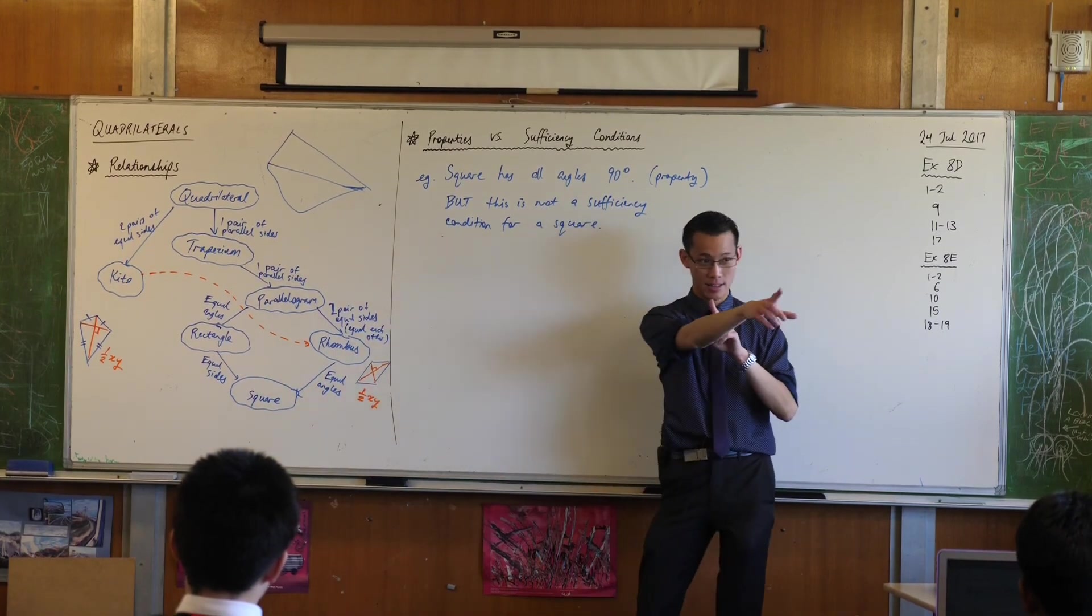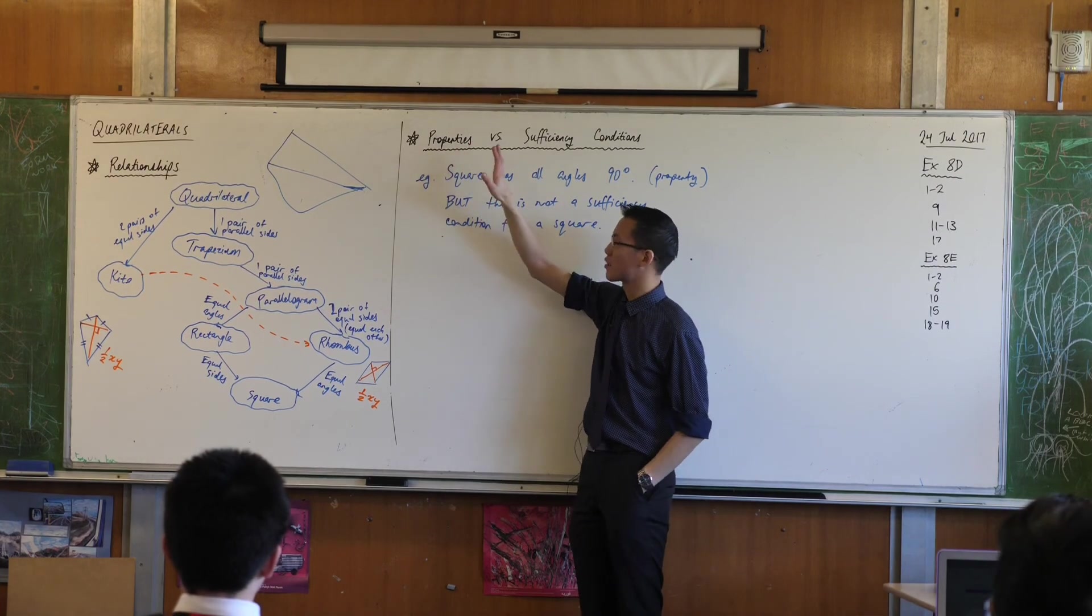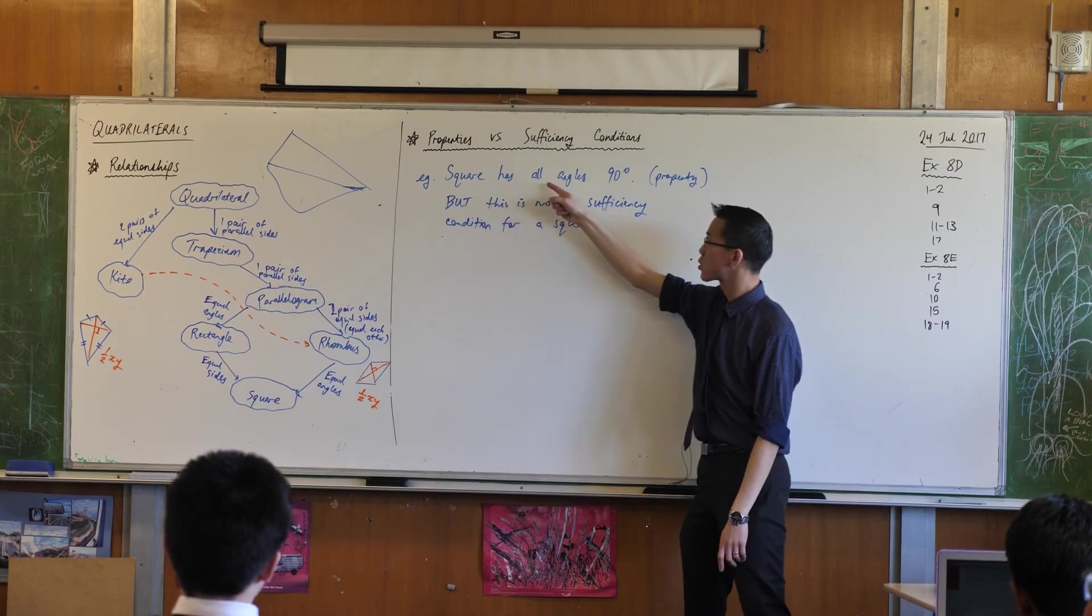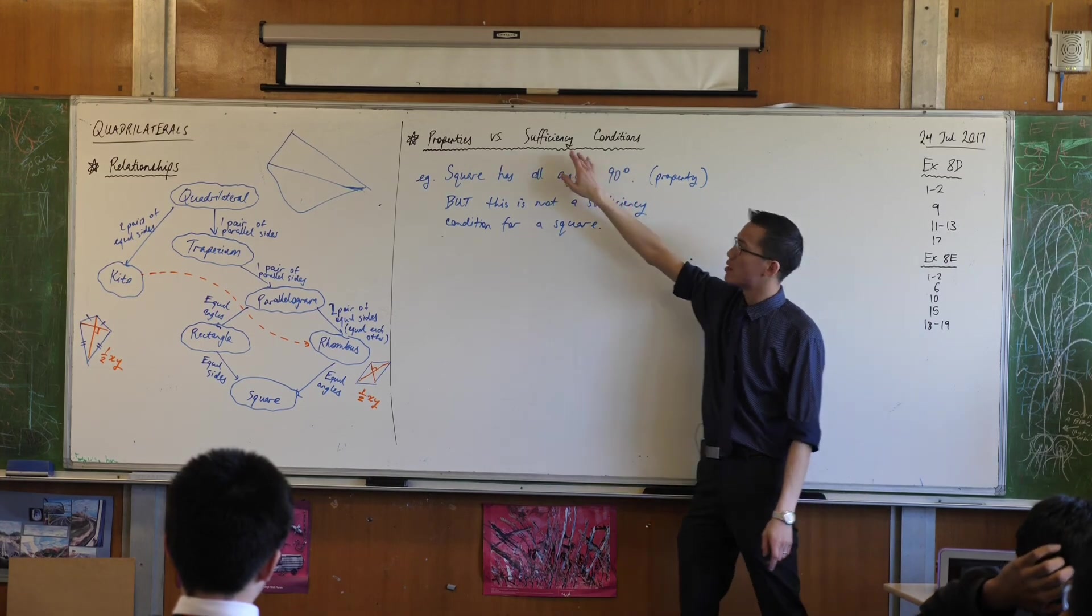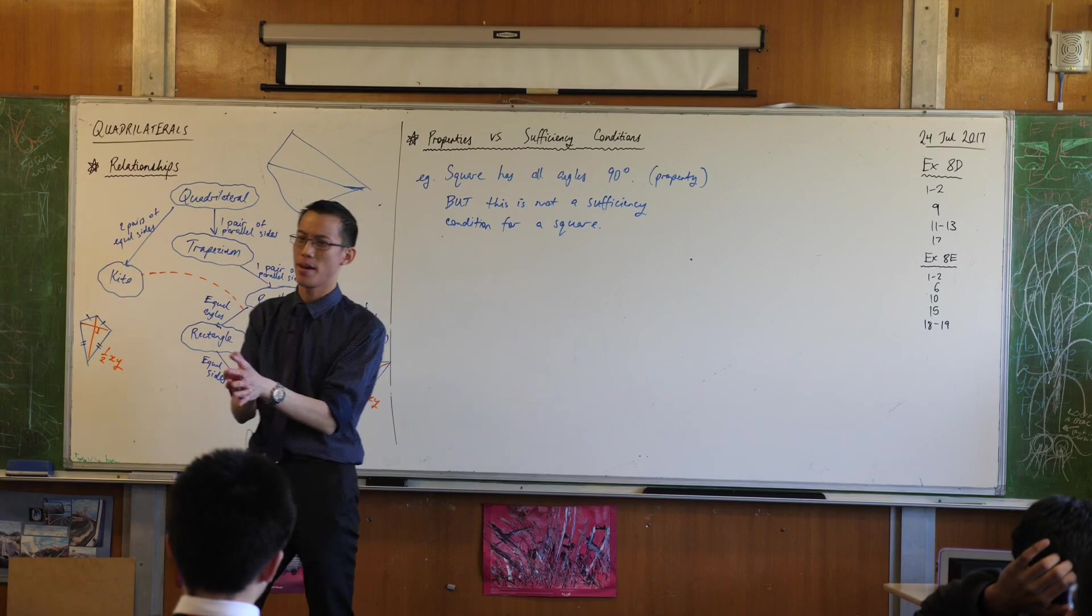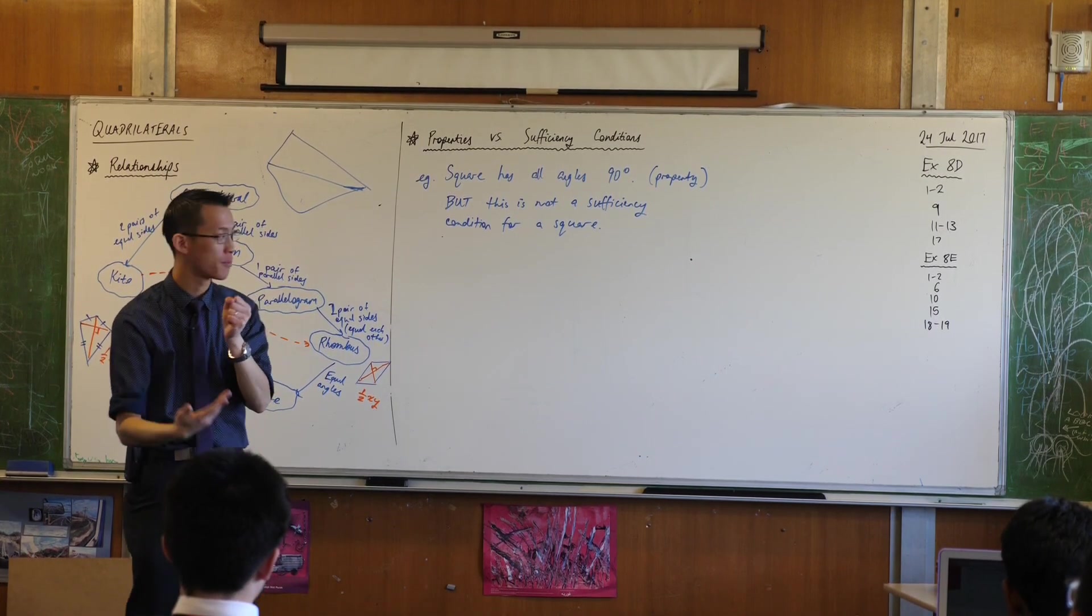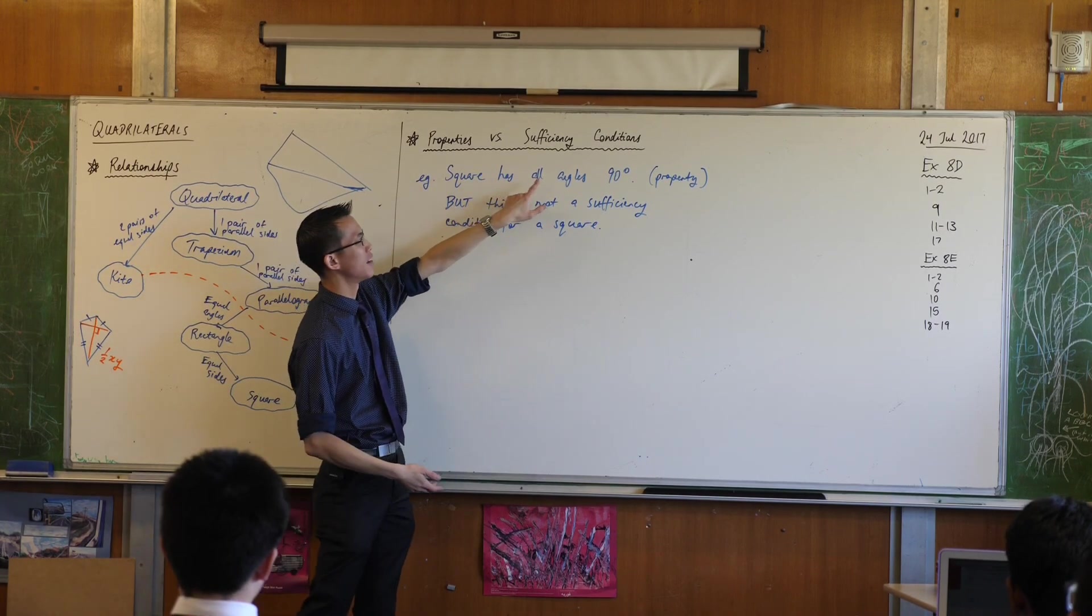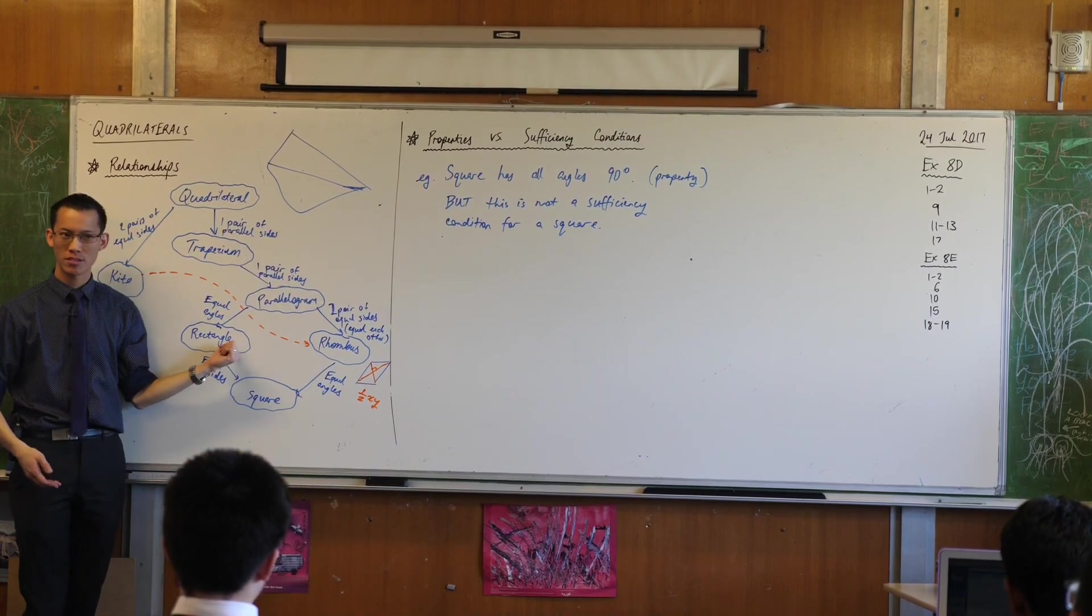So, let me just restate because again, the nuance is tricky. A property is a quality, an attribute, a feature that a shape has. All squares have all angles that add up to 90 degrees. But a sufficiency condition is a little more special than that. It means that if you know this about a shape, it must be a square or it must be a rectangle, etc. So, it's not sufficient to prove that something has all angles 90 degrees, therefore it's a square, because it still might be something else. Does that make sense?